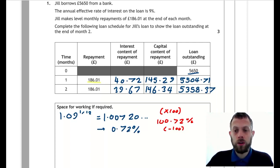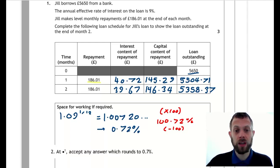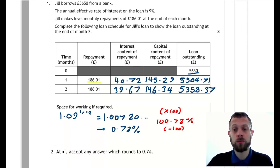Now, according to the marking scheme, it says that for mark one, accept any answer which rounds to 0.7%, which makes me suspect that you may be given some leeway in terms of binding to these exact pennies.